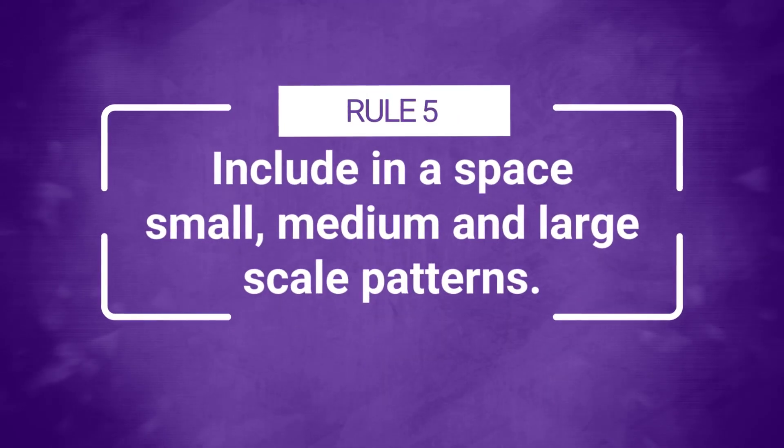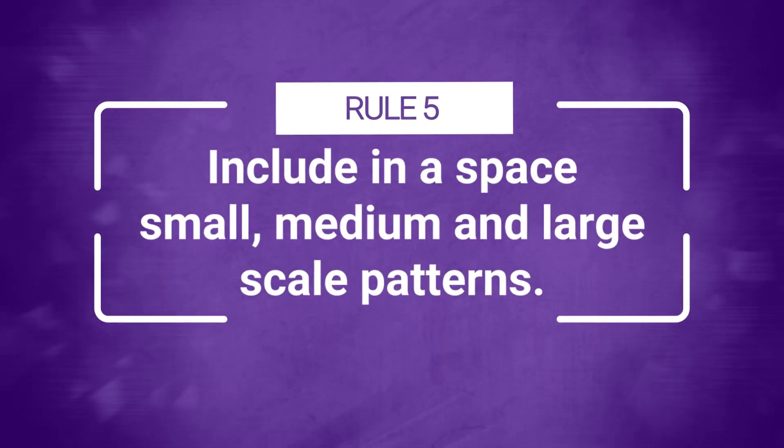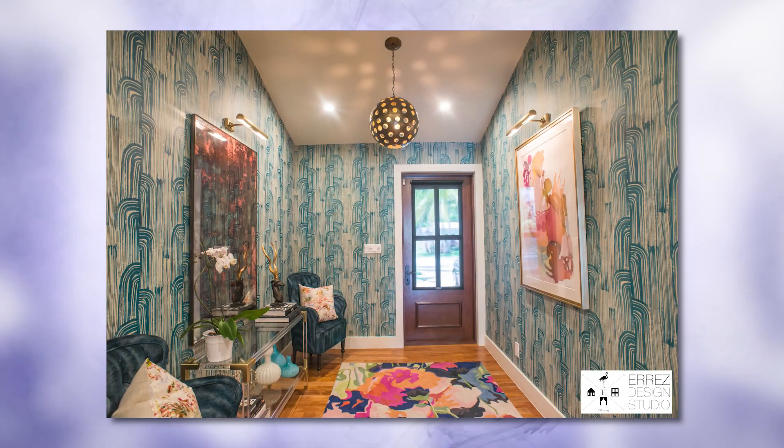Rule of thumb number five: you're going to want to include in a space small, medium, and large-scale patterns. Maybe the sofa or the furniture has a small-scale patterned fabric, the curtains have a medium-scale pattern, and the rug has a large-scale pattern. But every space should have small, medium, and large present.